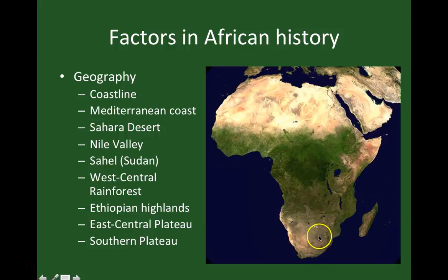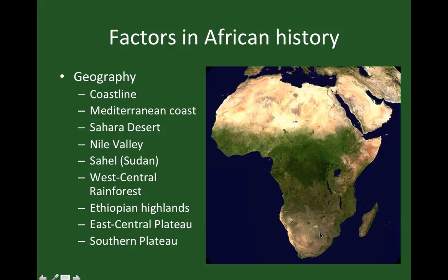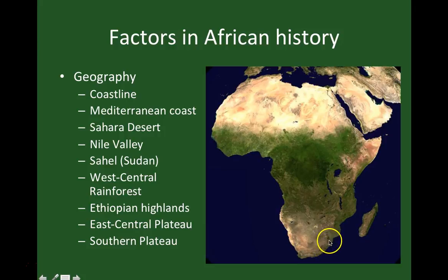And then finally down here, the southern plateau. This is to say nothing of Madagascar, which has its own self-contained geography — unfortunately I'm not going to talk much about that in this course. The Kalahari Desert over here is actually far drier than the Sahara. Much of this region down here is arid. The only part that really sustains agriculture on the southern plateau is where the plateau gives way to the region known as KwaZulu-Natal, which does sustain a high level of agriculture. So that's a basic overview of African geography — by no means extensive, but you can see the diversity, and that geographic diversity produced a great human diversity and diversity of societies.